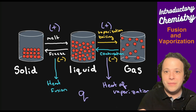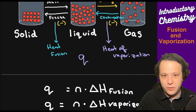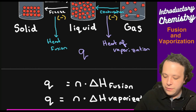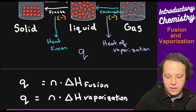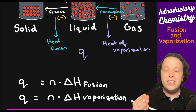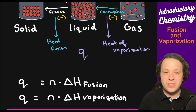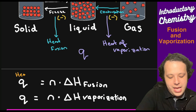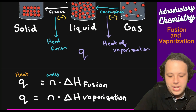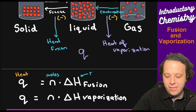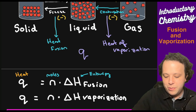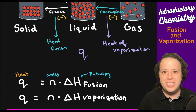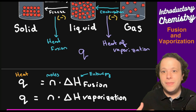Here are the formulas: q = n × ΔH, where you use either ΔH fusion or ΔH vaporization depending on the phase change. A subscript tells you which one to use. q is our heat value, n is moles, and ΔH is enthalpy — often just called delta H fusion for introductory students. We multiply these two concepts together to calculate heat.